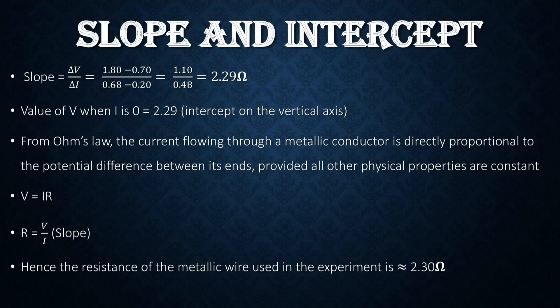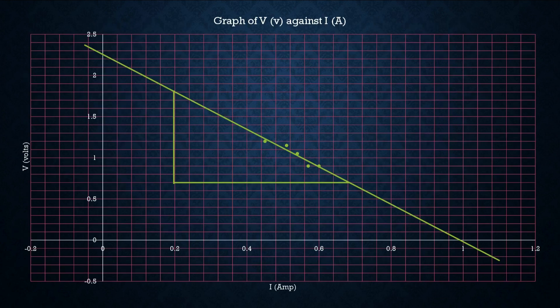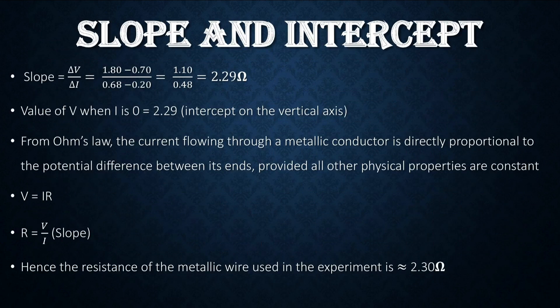Also from the graph, if we find the value of V when I is zero—that is to find the value of the potential difference at the point where current is zero—you will notice that that will give you 2.29 as well. So that confirms to you that the resistance is 2.29, which is approximately 2.3 ohms. So if we follow from Ohm's law, which states that current flowing through a metallic conductor is directly proportional to the potential difference between its ends provided that other physical properties are kept constant, and then you know that we plotted a graph of V against I, meaning that if we follow that this law, making R our subject formula, we are going to get V over I. That is exactly what we plotted. It means that our slope value represents the resistance of the wire, which is also confirmed when the current was at the zero point.